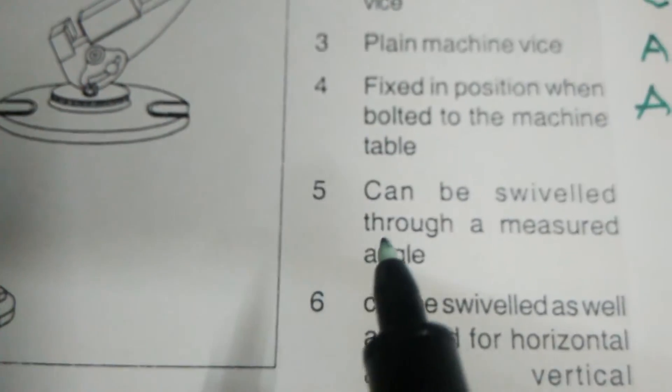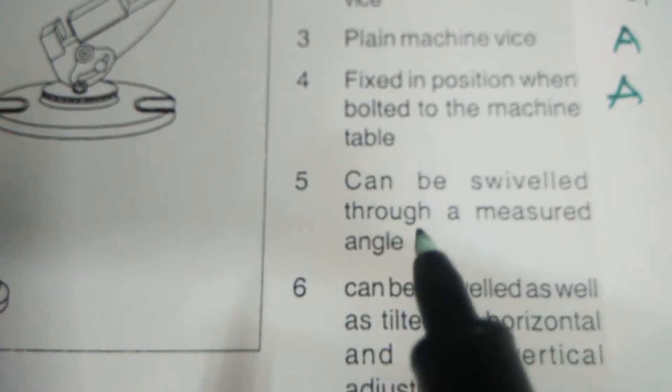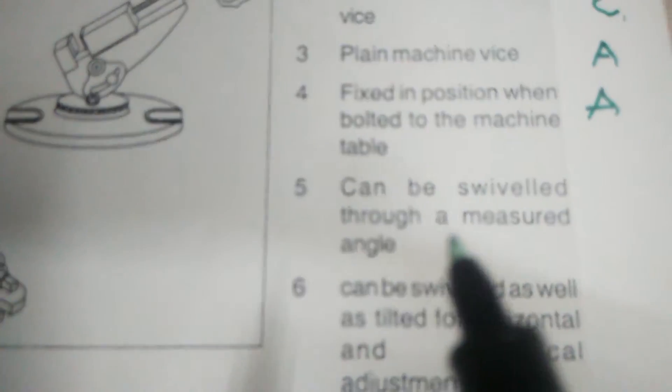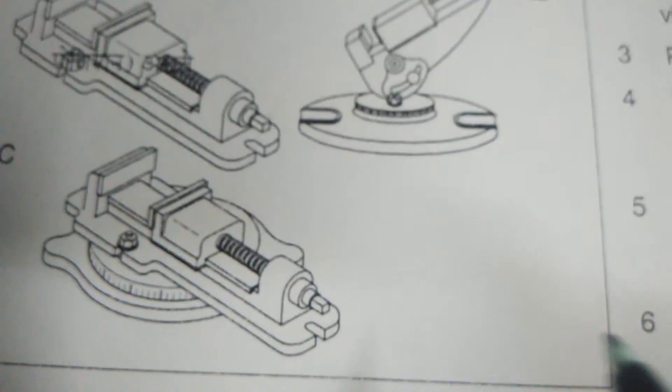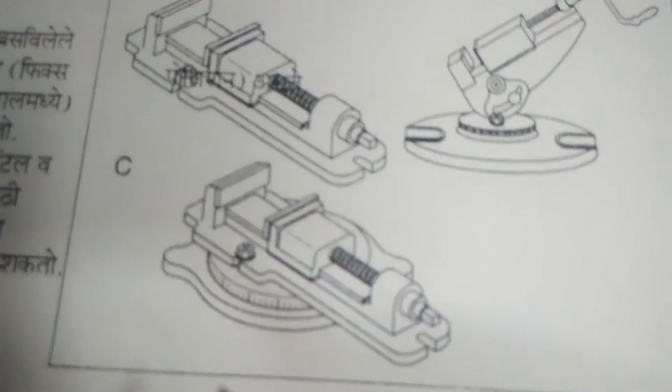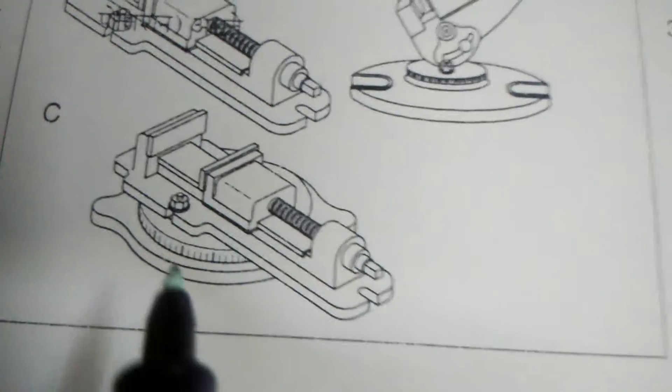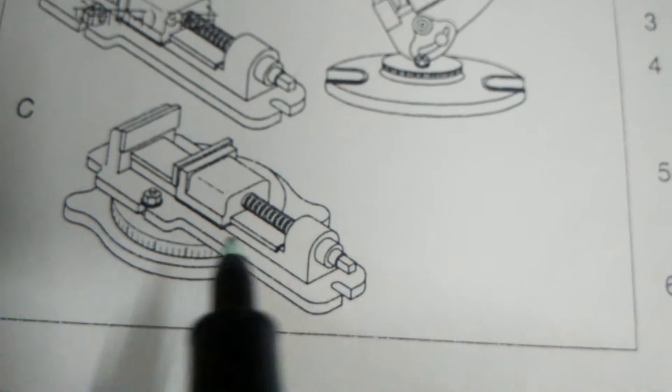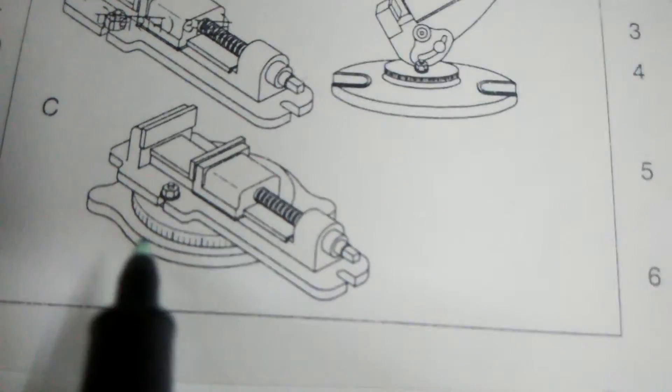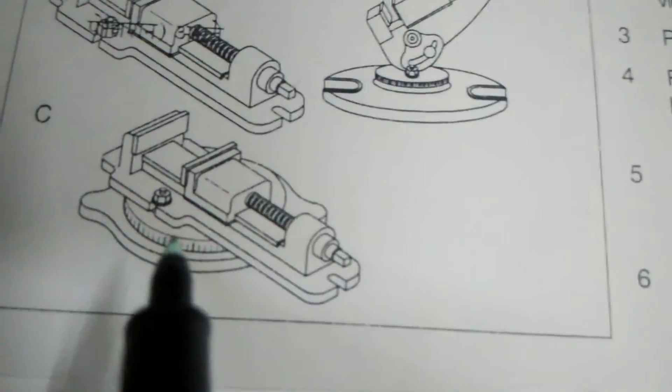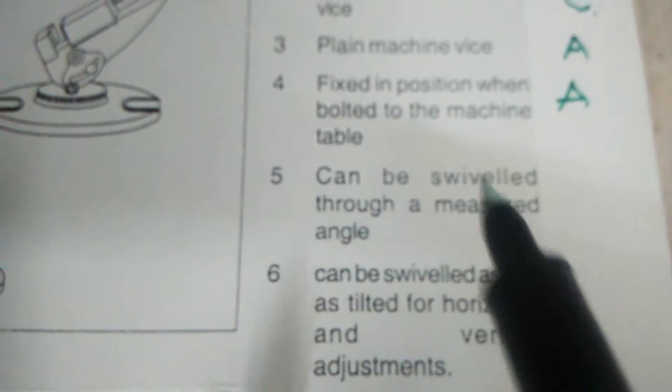Then fifth: Can be swiveled through a measured angle. The correct answer is C. This is angle, you can measure 30, 90, 45, like this. Write down here, C.